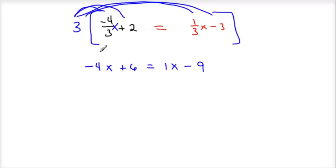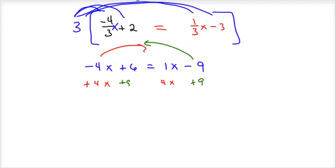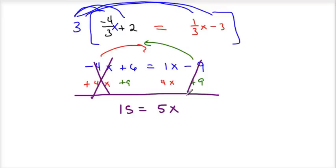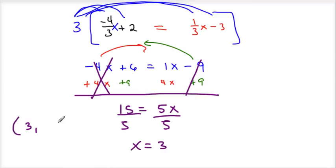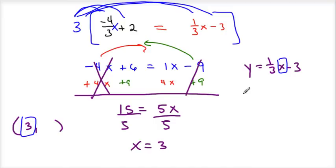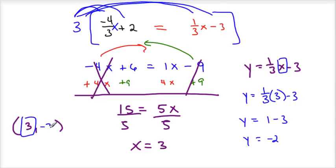Variables on one side, constants on the other. Add 4x and add 9 to both sides. So 6 plus 9 is 15, and x plus 4x is 5x. Then divide by 5 on each side — x equals 3. Now I need the y-coordinate, so I go back to the equation y equals 1 third x minus 3, and substitute x equals 3: y equals 1 third times 3 minus 3, which equals 1 minus 3, which is negative 2. My solution is 3, negative 2.